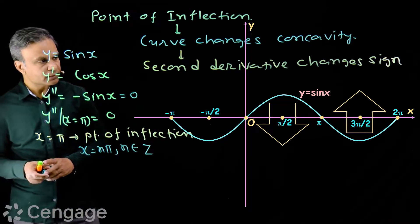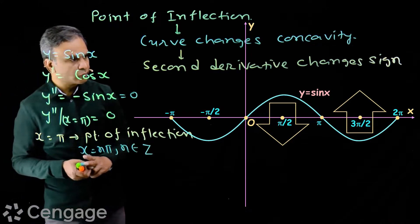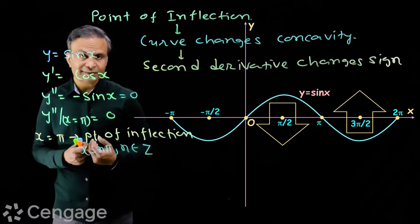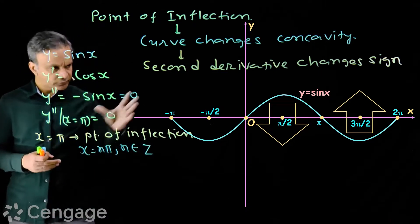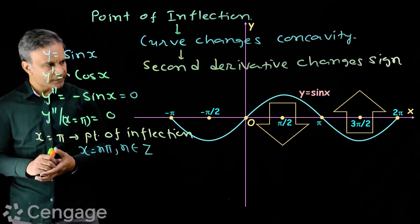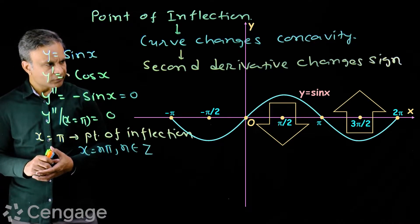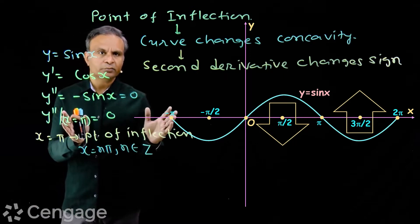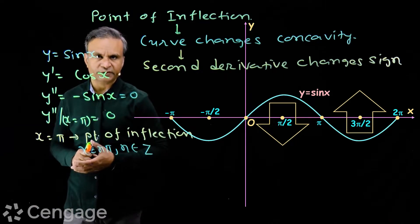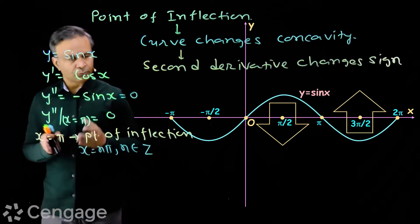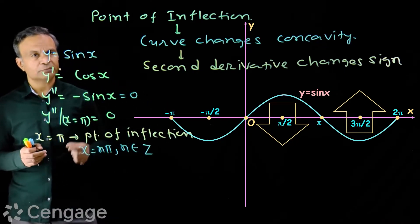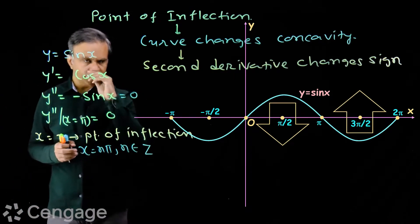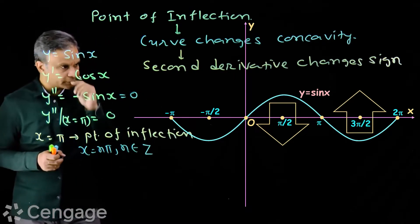All these points are points of inflection where the curve changes its concavity. Now let's see how the tangent line is situated at a point of inflection, if it exists.